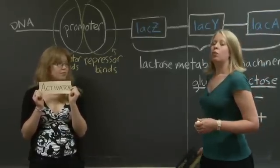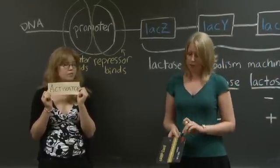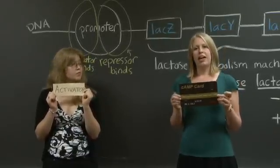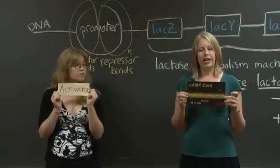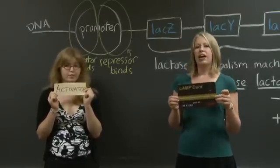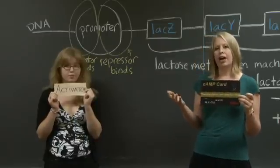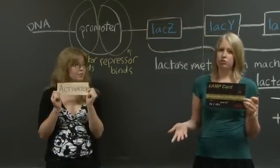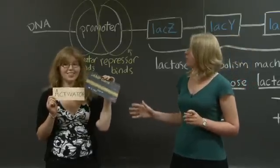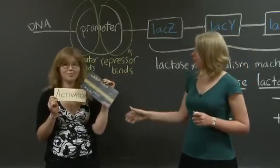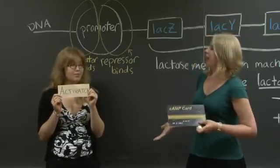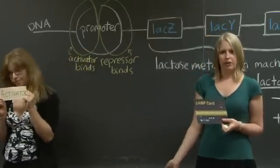How does the cell tell whether there is glucose in the cell or not? When glucose is low in the cell, the cell makes a molecule called cyclic AMP, or CAMP. I have a molecule of CAMP right here. CAMP is the cell's way of indicating that there is low glucose in the cell. The activator needs CAMP to bind to the activator binding site. When CAMP is removed, or glucose is added, the activator cannot bind to the promoter anymore.